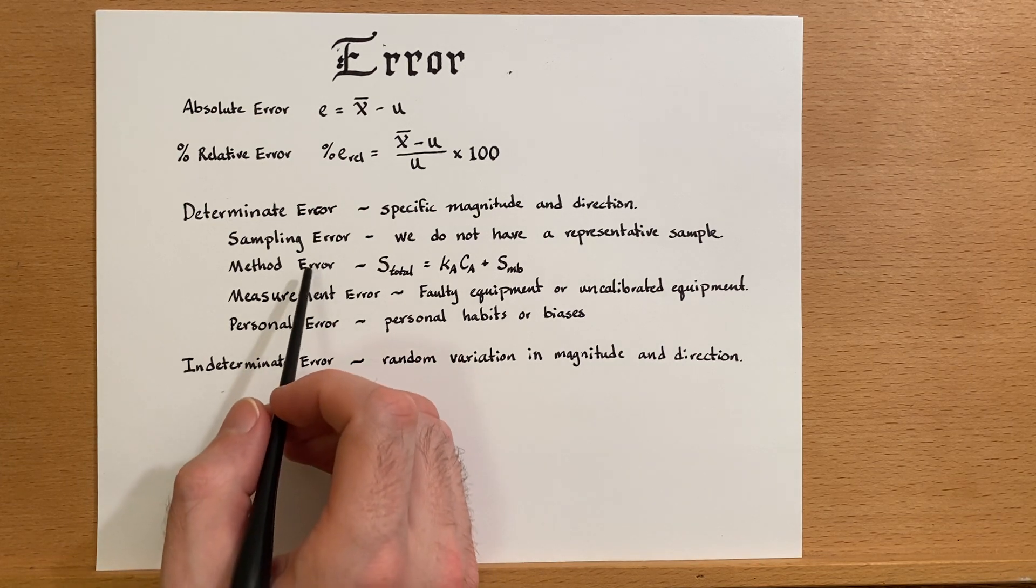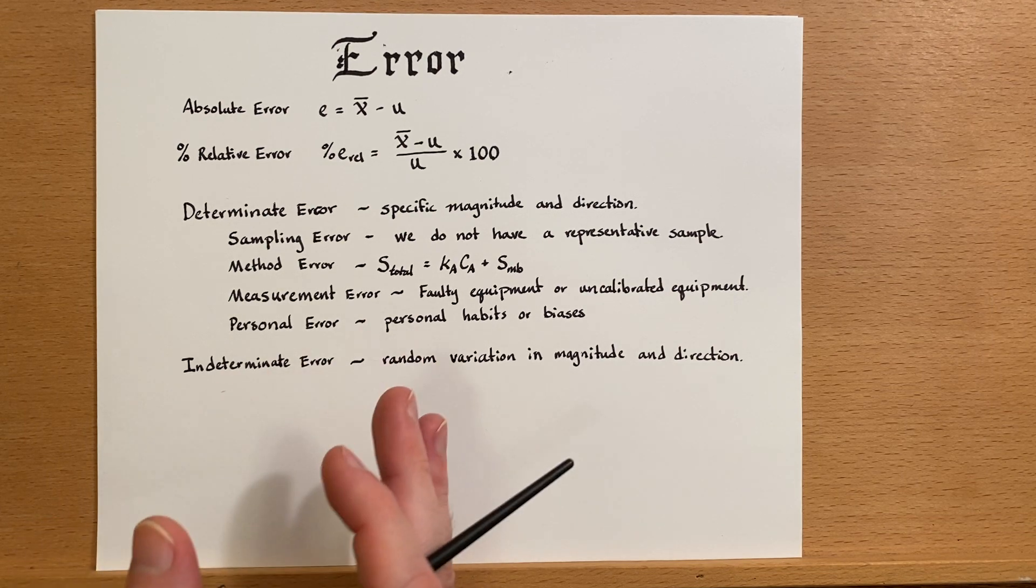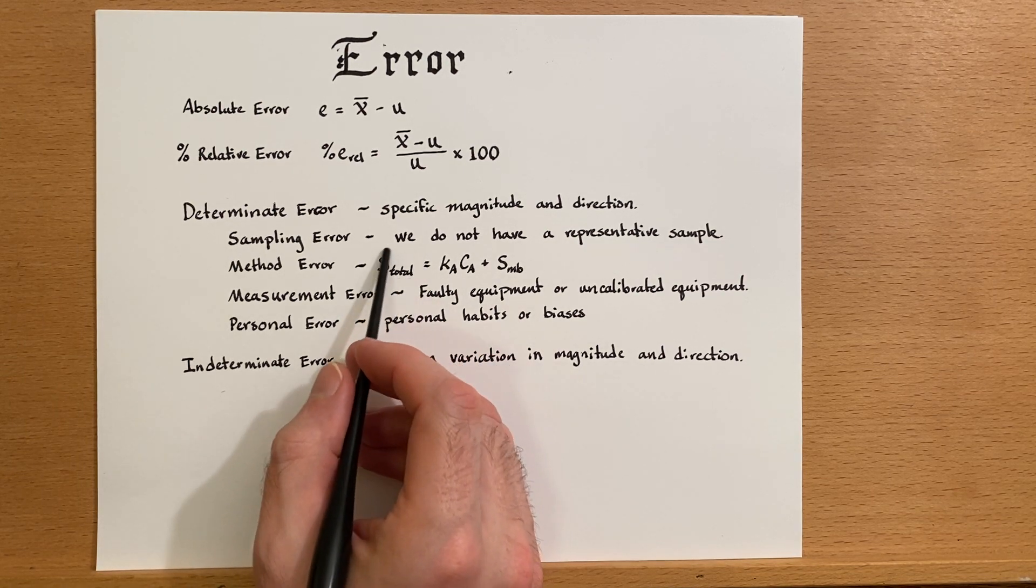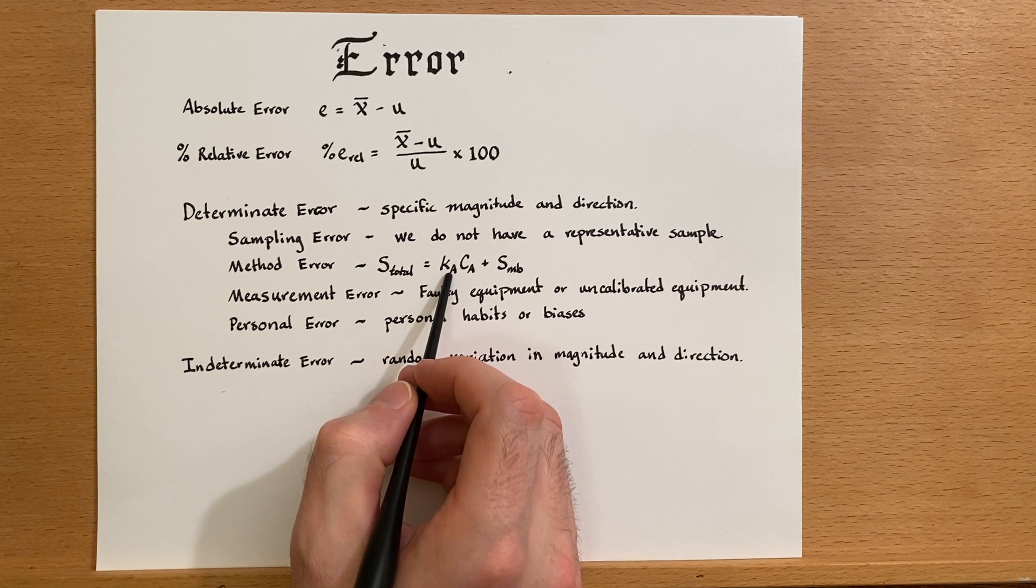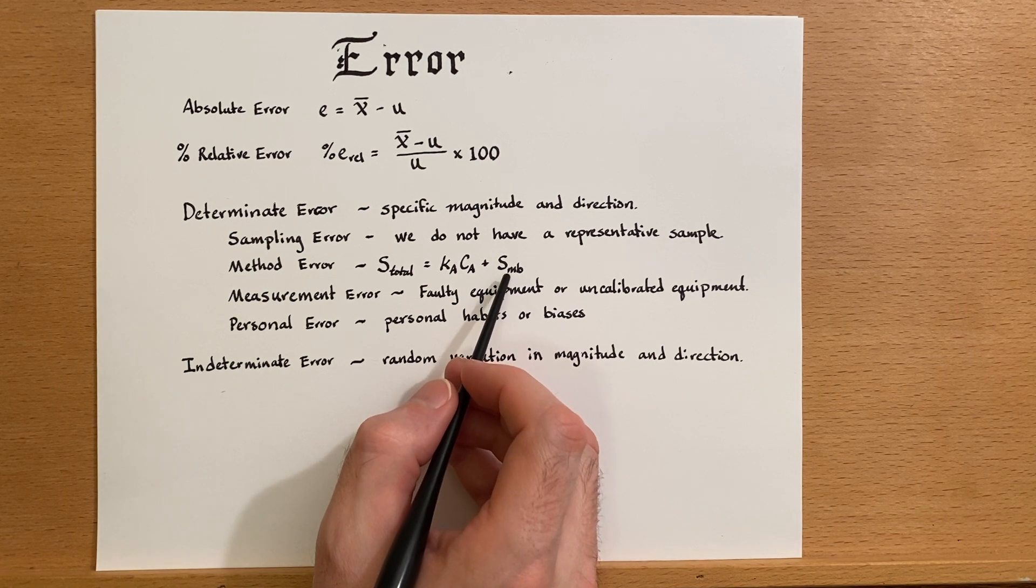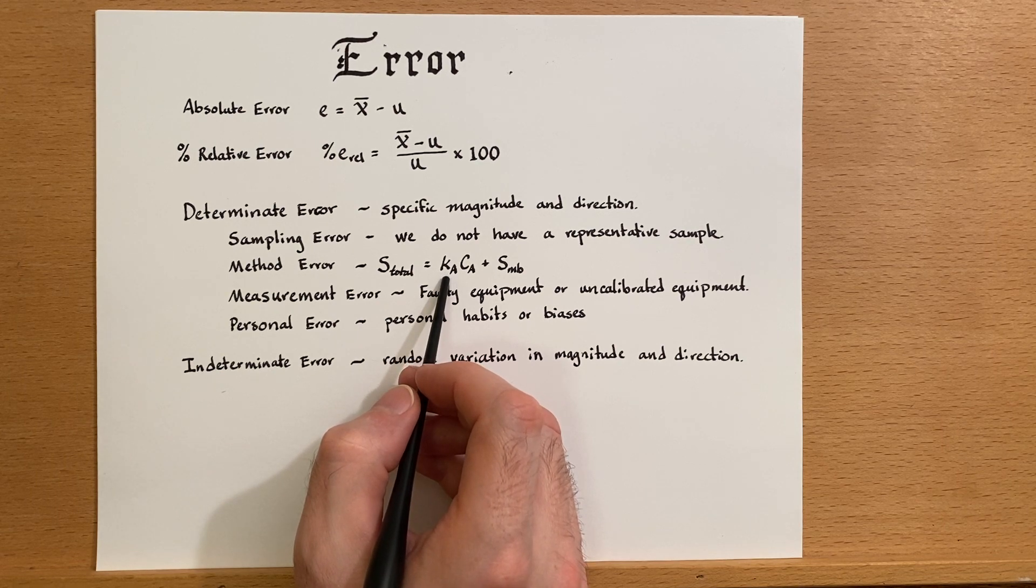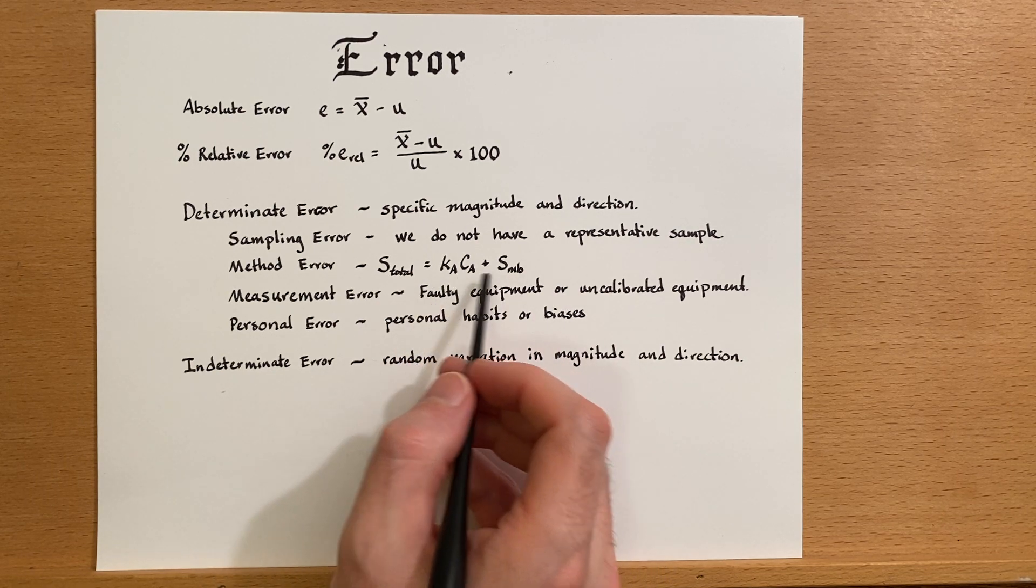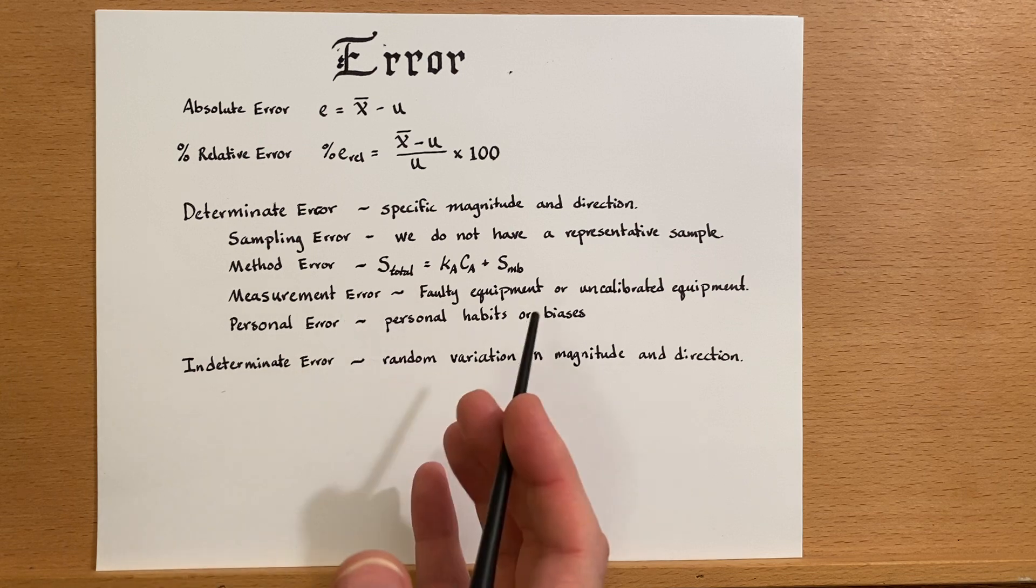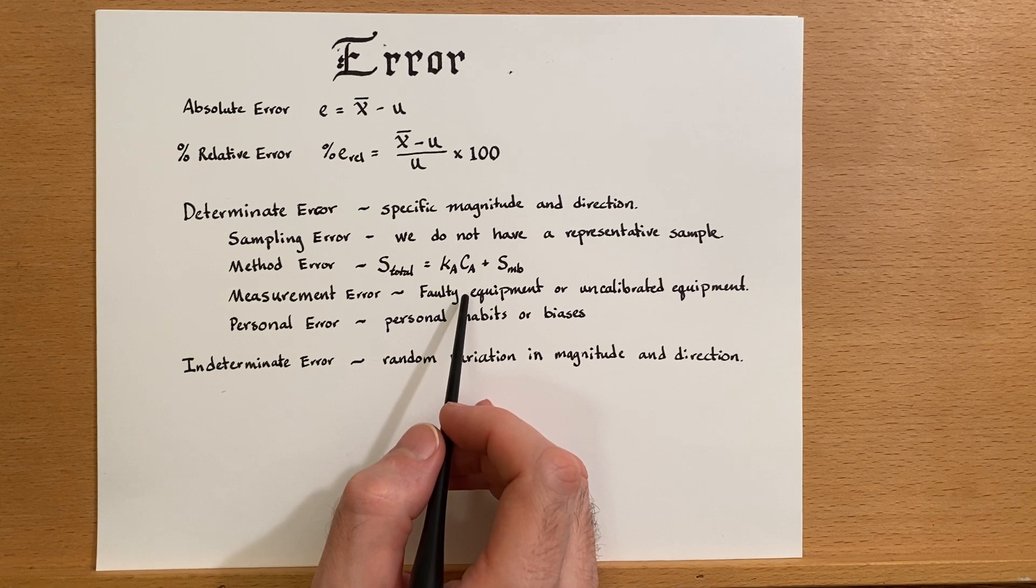Another error that could happen is a method error. This is an error that is resultant from a faulty method or a faulty calibration. Usually we'll have a signal, we'll have some proportionality constant times the concentration plus our method blank. If there is a problem with the method blank or a problem in measuring the proportionality constant, we could introduce a method error. The way to deal with that is to either improve the method or create a new calibration curve based on what we have measured.